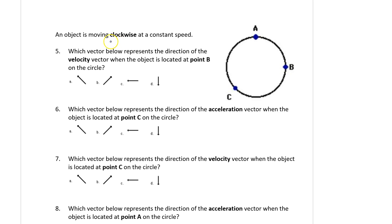All right, if the object is moving in a clockwise position at point B the velocity vector will be straight down, so that answer would be D. Which vector is the acceleration from point C? Well the acceleration is going to be towards the center, so that one would be B.